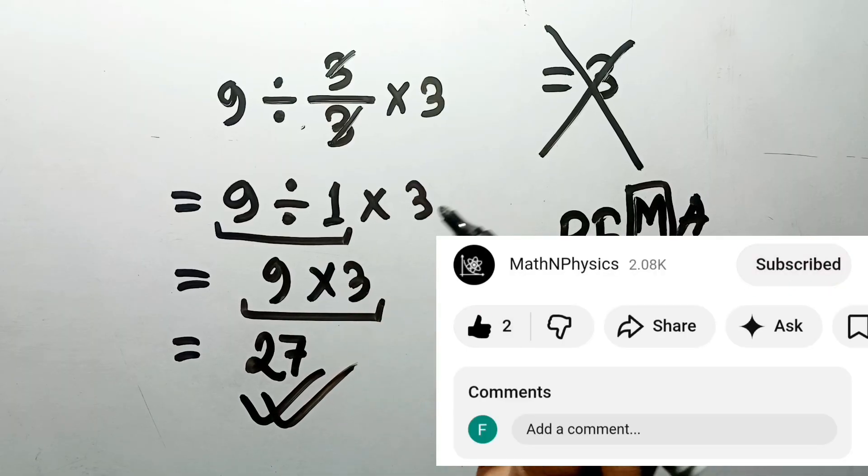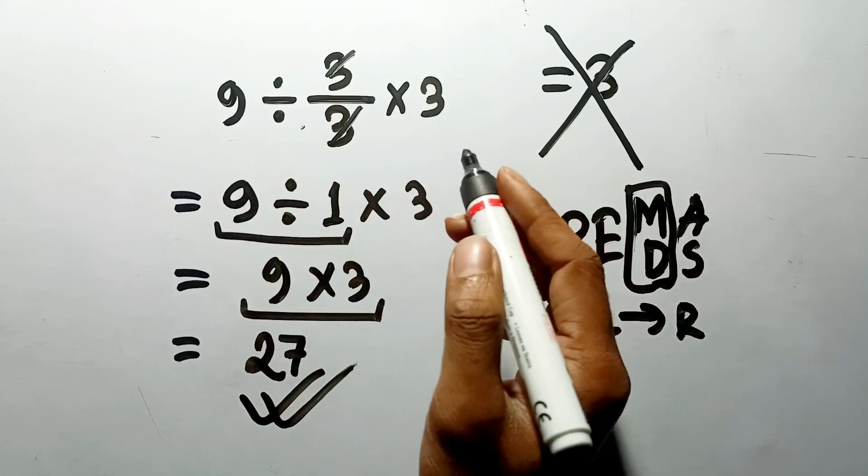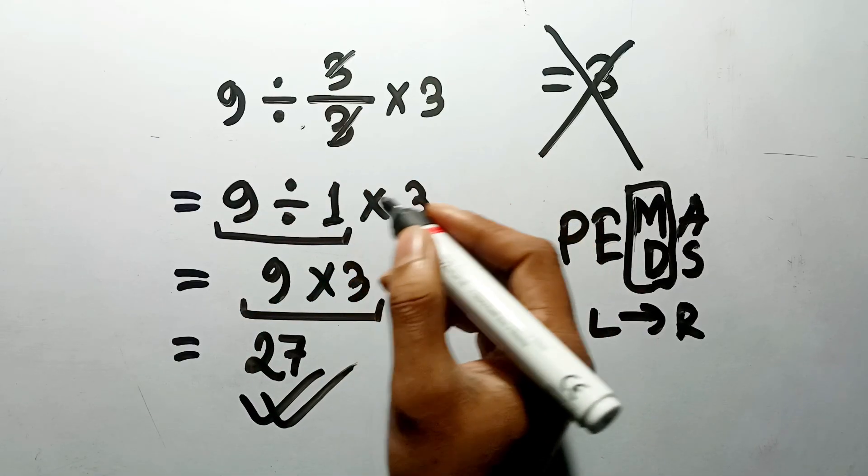So, did you fall for the trap of canceling the numbers too early, or did you spot the hidden grouping? If you want to argue about it, the comment section is open.